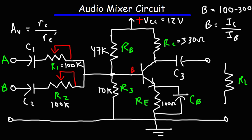So that's basically it for this video. Now you know how to create an audio mixer circuit. Really, the key is to have multiple inputs at the base of the transistor. It's basically an amplifier circuit with multiple inputs.